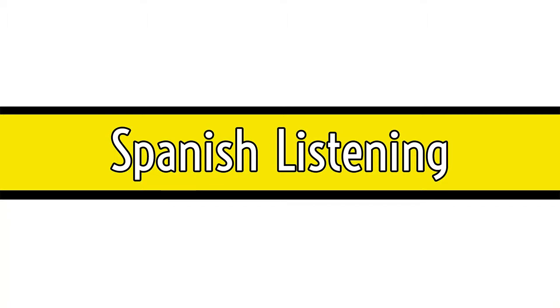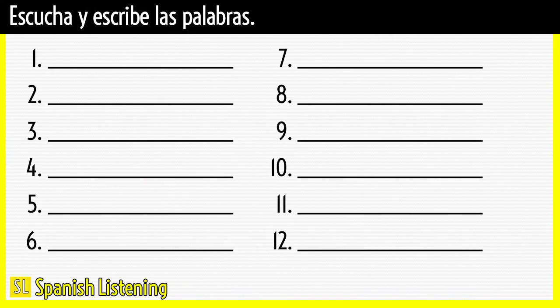Hello guys, welcome to Spanish Listening. Today we are going to practice the Spanish alphabet. In this activity I will spell 12 different words in Spanish. What you need to do is listen and write the words correctly. Have a piece of paper and pencil with you and number it from 1 to 12. If you aren't ready yet, pause the video now and resume it when you are. If you are ready now, let's get started.